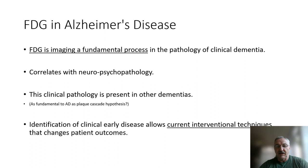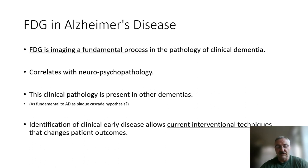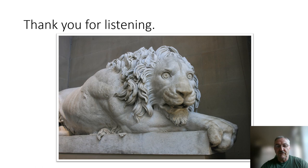FDG is imaging a fundamental process in the pathology of clinical dementias, and we'll discuss how this correlates with neuropathology. FDG is imaging a clinical-pathological process within all the dementias — that's very important. Identification of early disease allows current interventional techniques to change patients' outcomes. Thank you for listening to this first part, and we'll go on to the following talks.